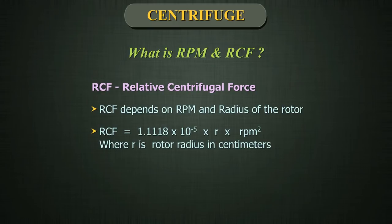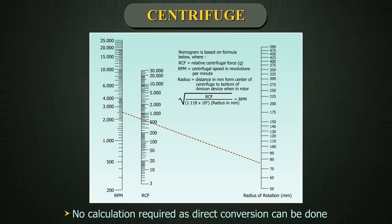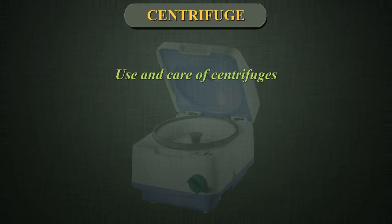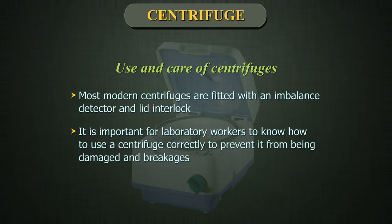The RCF depends on the RPM and the radius of the rotor. RCF is equal to 1.1118 × 10⁻⁵ × R × RPM², where R is the rotor radius in centimeters. A nomogram can be used to convert RCF into RPM using the radius of the centrifuge. No calculation is required as direct conversion can be done. The nomogram shows a scale of radius in millimeters on one side and the RPM and RCF on the other.